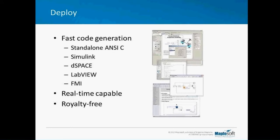You can also deploy your MapleSim model by generating standard ANSI C code — out-of-the-box functionality. The C code includes a solver and can be used and distributed royalty-free. With a range of toolboxes, we can also target real-time environments like Simulink, DSpace, and LabVIEW, and FMI is certainly a growing theme. Code generation to all real-time targets leverages Maple's symbolic optimization technology — using Maple's symbolic math functionality to optimize system equations by removing redundant relationships, simplifying complex trig expressions, and more.